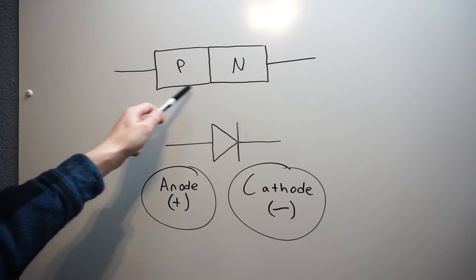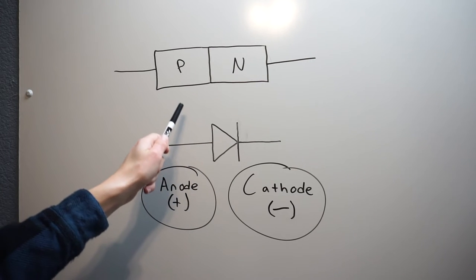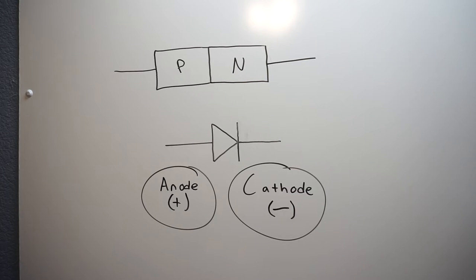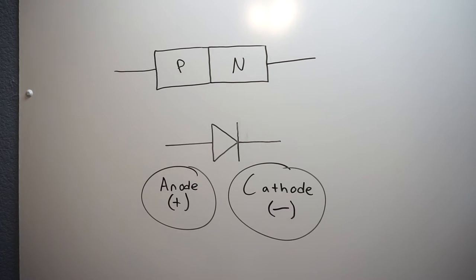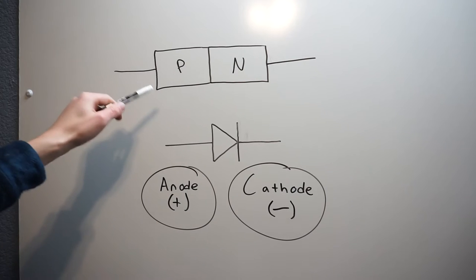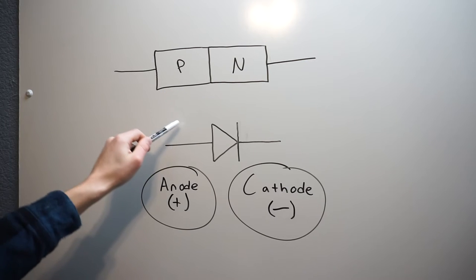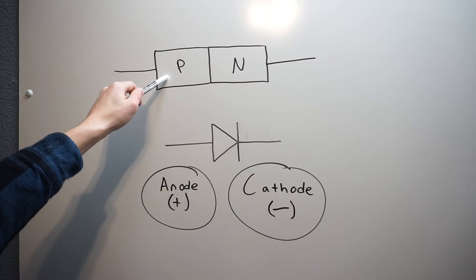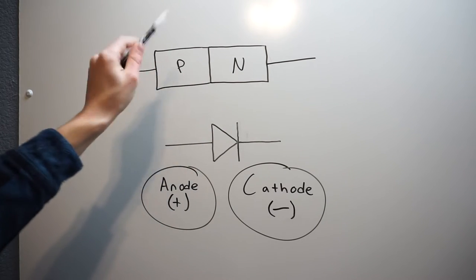The diode is the simplest semiconductor component — it's just a P-N junction. Essentially this schematic symbol matches up with these junctions. There is a P-junction on this side, which is the anode, and the cathode is the N-junction. So this is what's actually happening inside the diode semiconductor-wise.